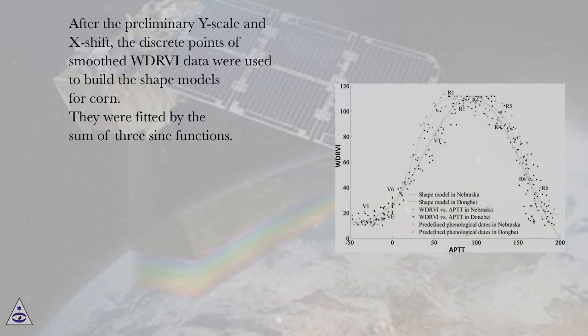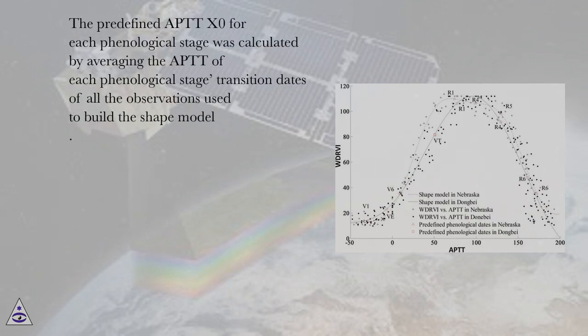They were fitted by the sum of three sine functions. The predefined APTT X0 for each phenological stage was calculated by averaging the APTT of each phenological stage transition dates of all the observations used to build the shape model.